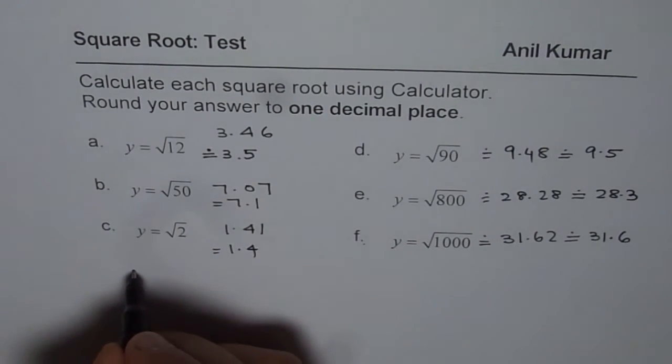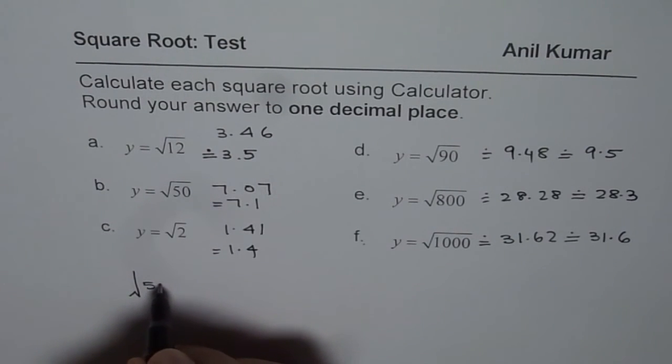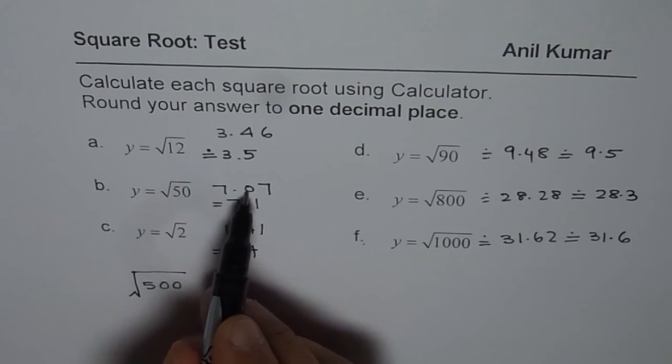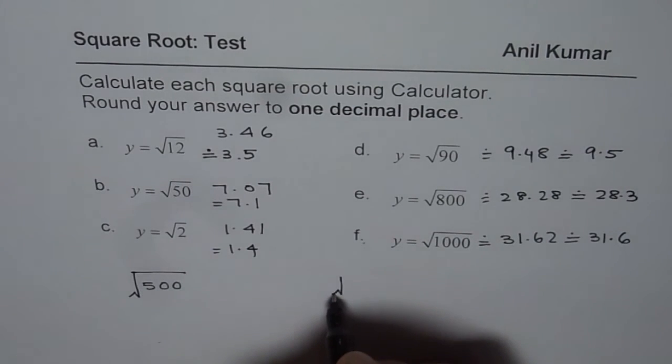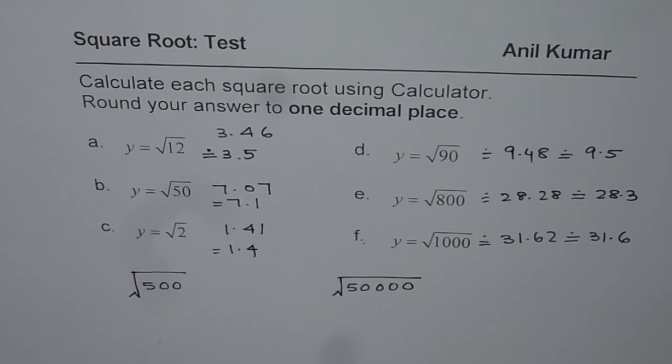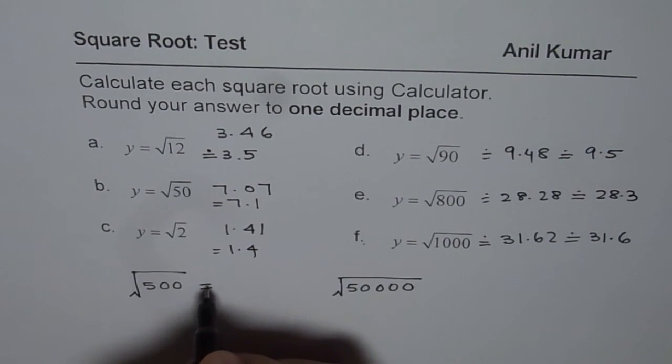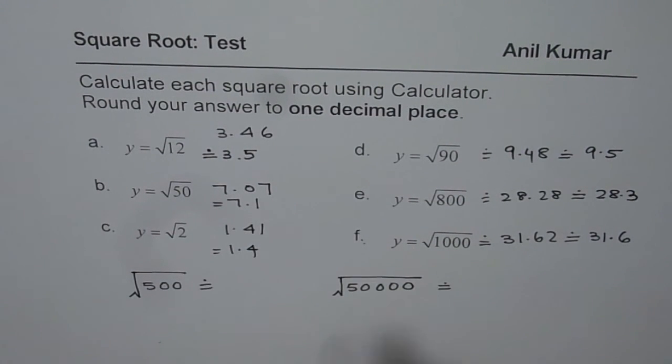Now here are two more for you to calculate. Let's say we have square root of 5000, you know square root of 50 is 7.07, check the square root of 5000. And also square root of 50,000. So check these square roots and see how these answers are related, and round them to one decimal place. So that is an exercise for you. And see what do you correlate from your results. I hope that helps. Thank you and all the best.